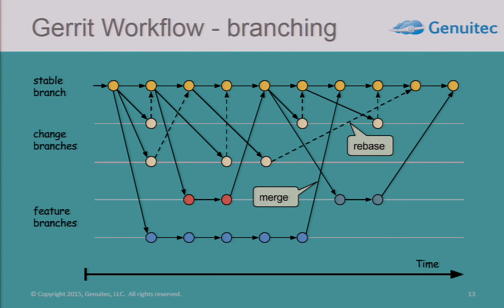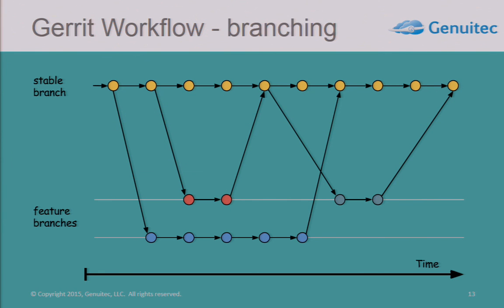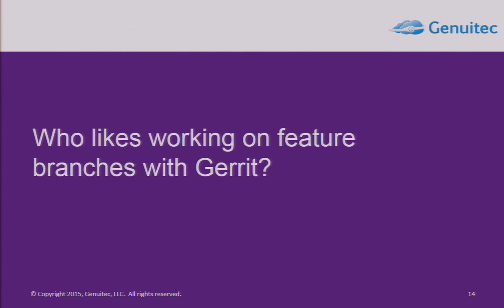This is how the workflow with Gerrit branching works. As you can see, it's much simpler than the previous one. Those change branches — the commits on them — are rebased, not merged. So the final history looks like this. I think if the simple solution handles all your problems, that's the better solution.